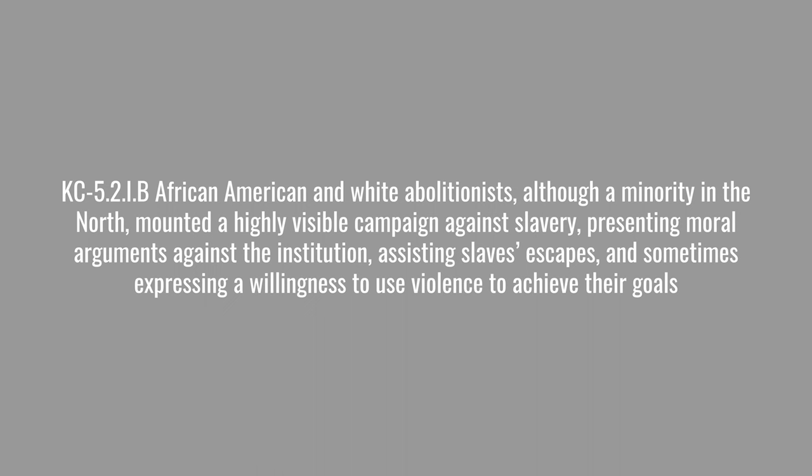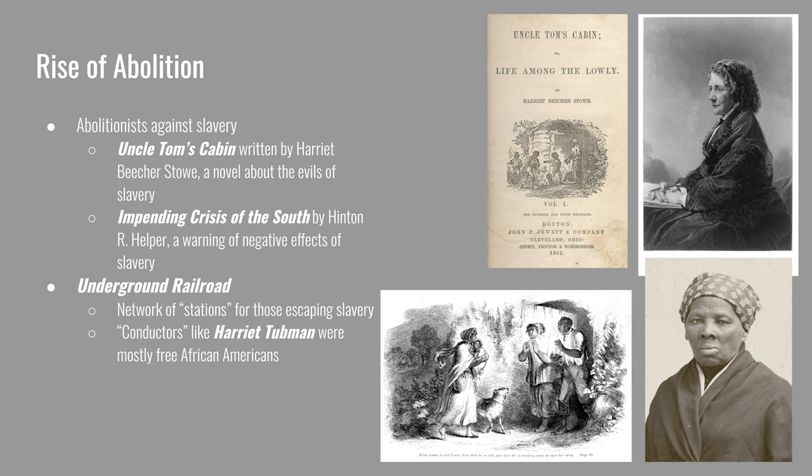Those who wanted to do away with slavery altogether, not just stop its spread, were called abolitionists. African-American and white abolitionists, although a minority in the North, mounted a highly visible campaign against slavery, presenting moral arguments, assisting enslaved people's escapes, and sometimes expressing a willingness to use violence. One of the most visible abolitionist efforts was the publishing of Uncle Tom's Cabin, a novel by Harriet Beecher Stowe that depicted the evils a typical enslaved person would face. It told the story of an enslaved man named Tom sold from plantation to plantation, giving accounts of auctions and punishment. It convinced a large portion of the North that slavery was evil, became a bestseller worldwide, and made Great Britain more abolitionist than before.